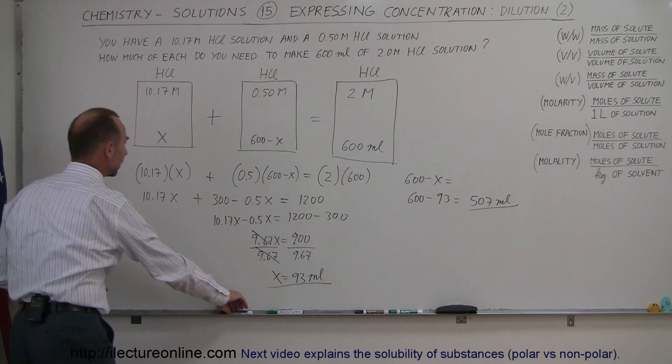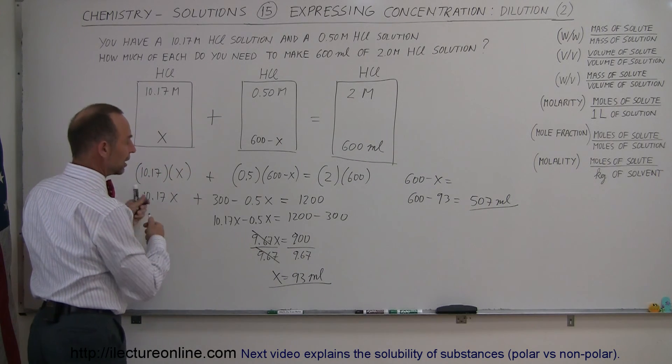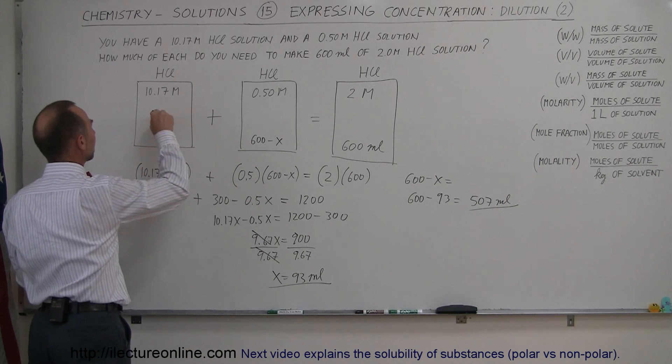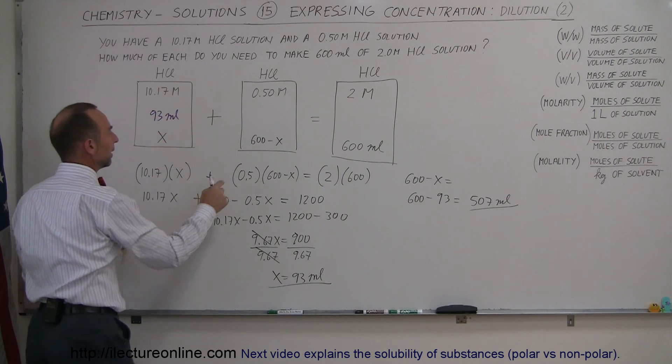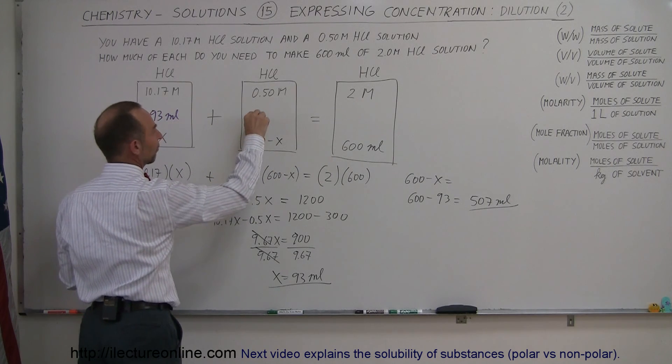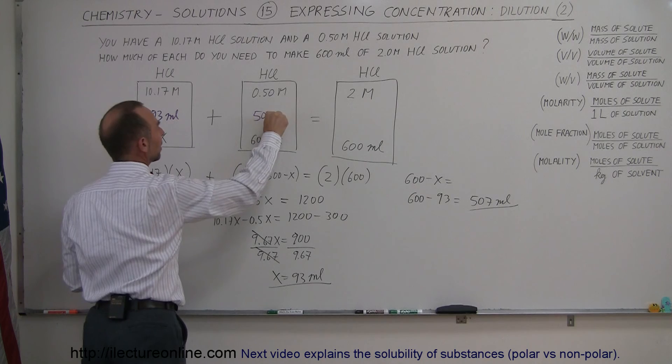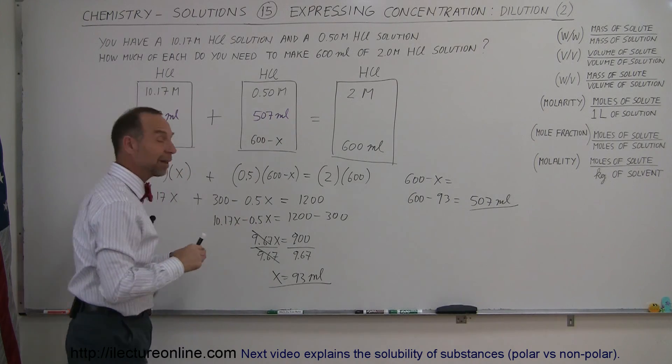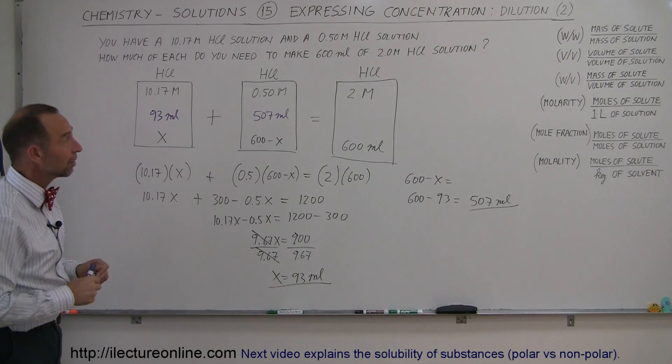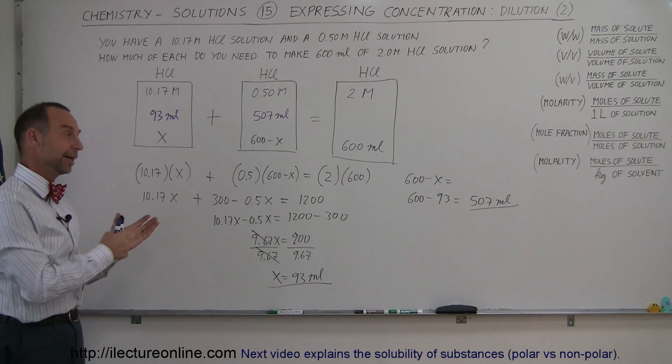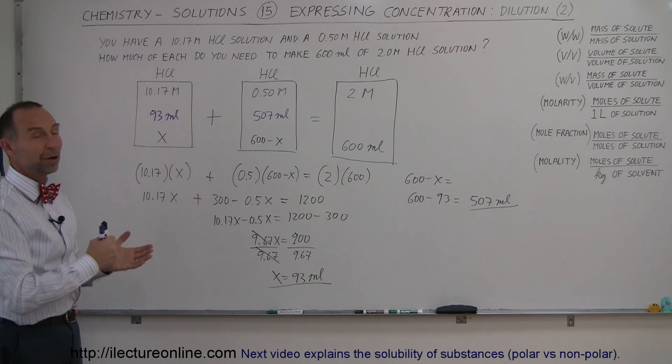So final answer, of this solution we are going to need 93 milliliters, because that's what x is equal to, and 600 minus that, which is 507 milliliters, is the amount we need from that solution to come up with 600 milliliters of a two molar solution. And that's how you do that. That's how you do what we call dilution.